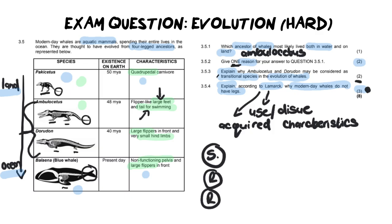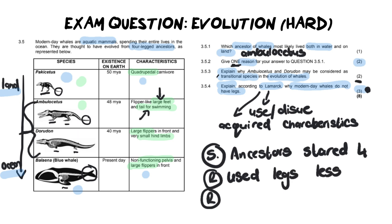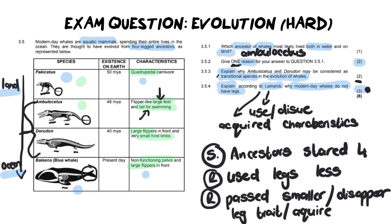Modern whales do not have legs because, statement, the ancestors started with four legs. Remember Lamarck? We started with something and then it changes over time. Those ancestors used their legs less, which means they disappeared, and they passed the smaller, or you could even say disappeared because eventually they will disappear, leg trait, you can also say acquired trait, onto their offspring.